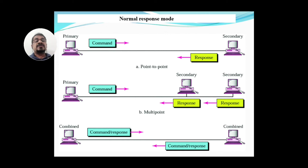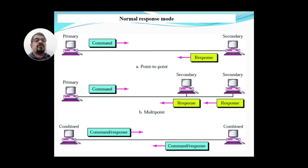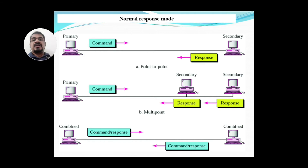Primary systems always send only commands and secondary systems send responses. In the first figure, a point-to-point link shows the primary sending commands to the secondary, and the secondary responding. The second figure explains one primary with multiple secondaries, which is a multi-point configuration. The primary can poll and select the secondary, send commands, and the secondary gives responses. This is the Normal Response Mode.